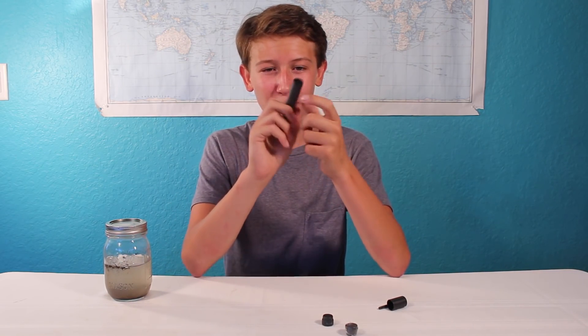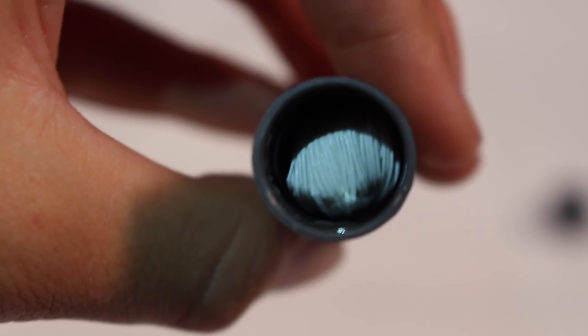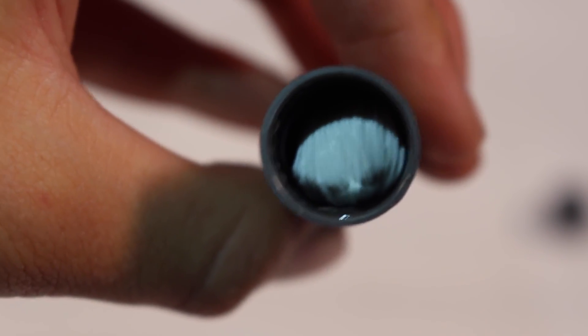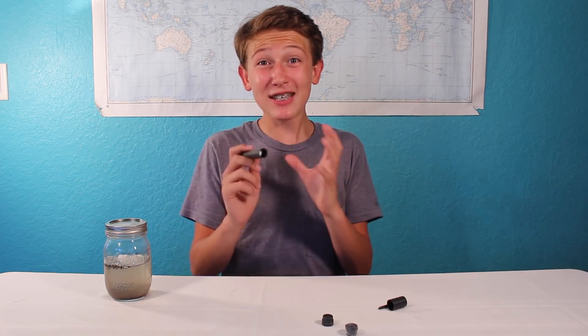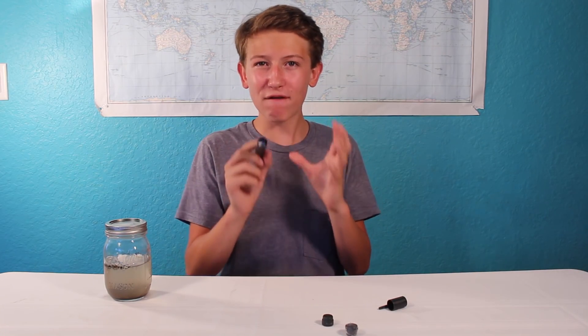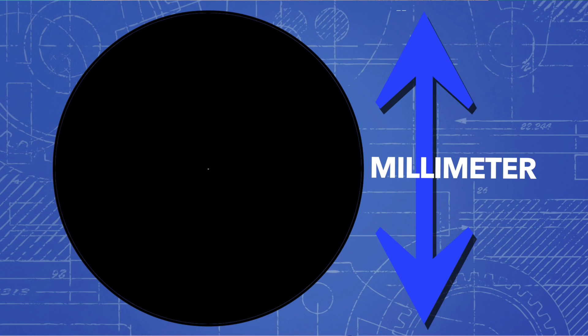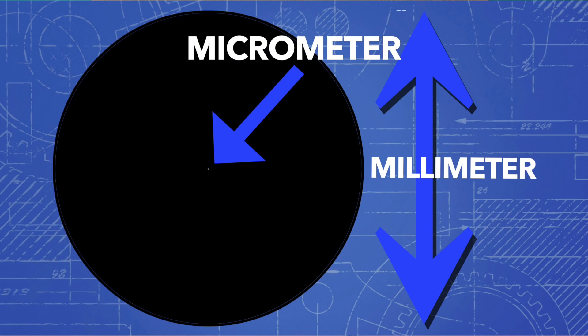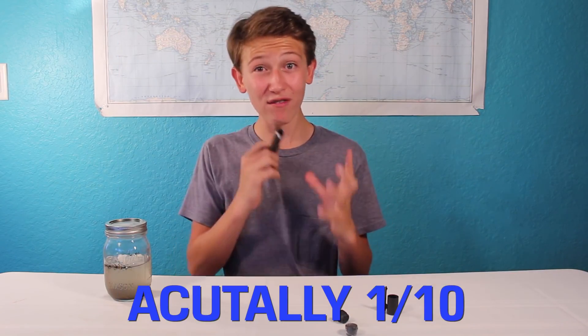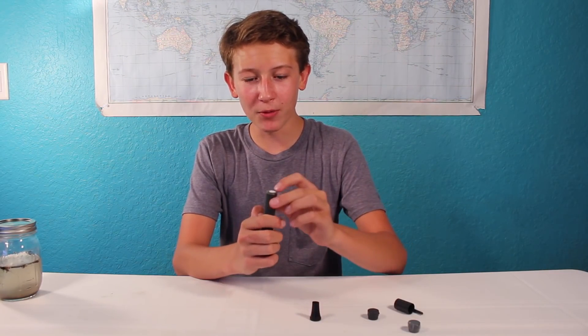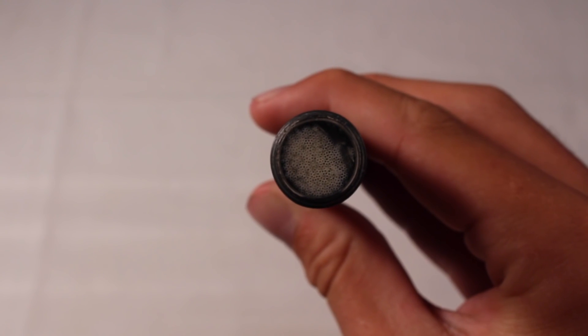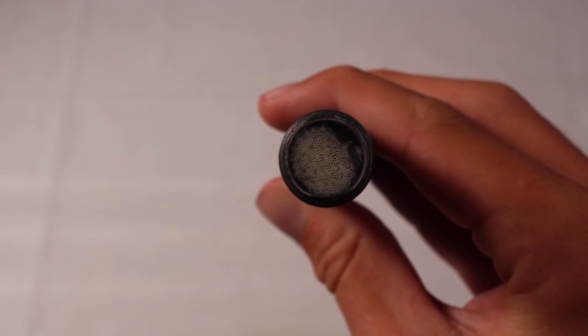The third and final stage is the most important — this is where most of the magic happens. If you look closely inside of the filter, you can see these little string-like things, and these are actually hollow fiber membranes. These tubes have extremely tiny pores that filter out particles up to one-tenth of a micrometer. To get a sense of how small this really is: just one micrometer is one one-thousandth of a millimeter, and this can filter things out that are just one one-hundredth of that. If we take off the top of the filter we can actually see the ends of these hollow fibers and see that they're a lot like straws.